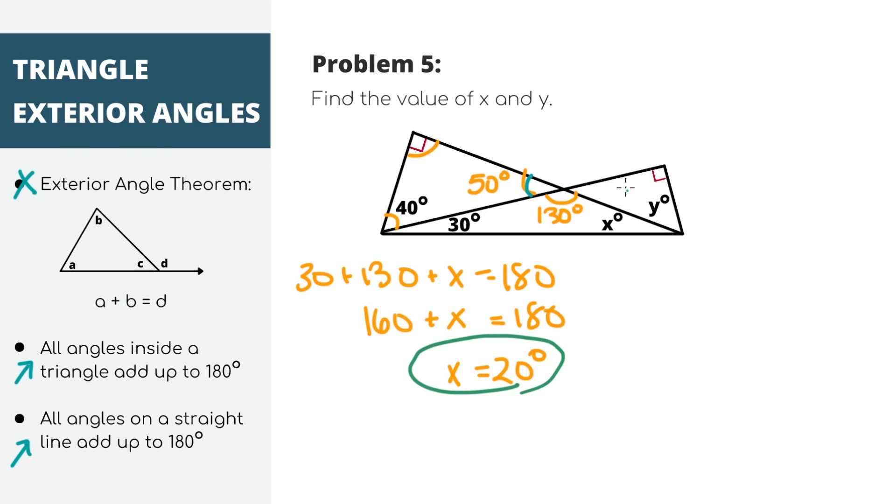These angles are directly across from each other, or in other words, they're vertical angles, which means that they're the same angle measure. Vertical angles are pretty important to know, but if you happen to forget, you can also use the fact that these two angles are on the same line and add up to 180. No matter how you think about it, this angle is 50 degrees.